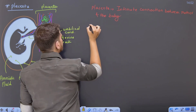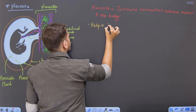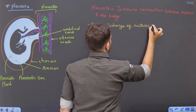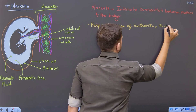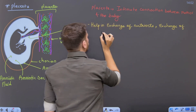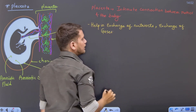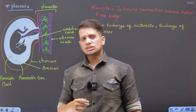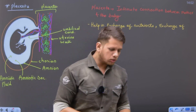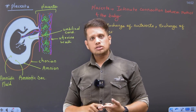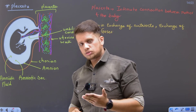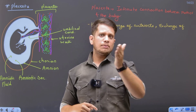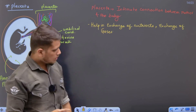Placenta ka function kya hai? Placenta can help in exchange of nutrients. It can also help in exchange of gases. Matlab kya, different types of nutrition jo mammi baby ko provide karti hai. And when we talk about exchange of gases, it can be oxygen and carbon dioxide — baby ko jo required amount of oxygen hai woh provide karna, phir jo baby ne CO2 banaya hai usko transport karwana, phir nutrition ke baare mein baat karna ki nutrition mammi se baby tak pahunche — yoh sara ka sara kaam jo hai, woh placenta karta hai.